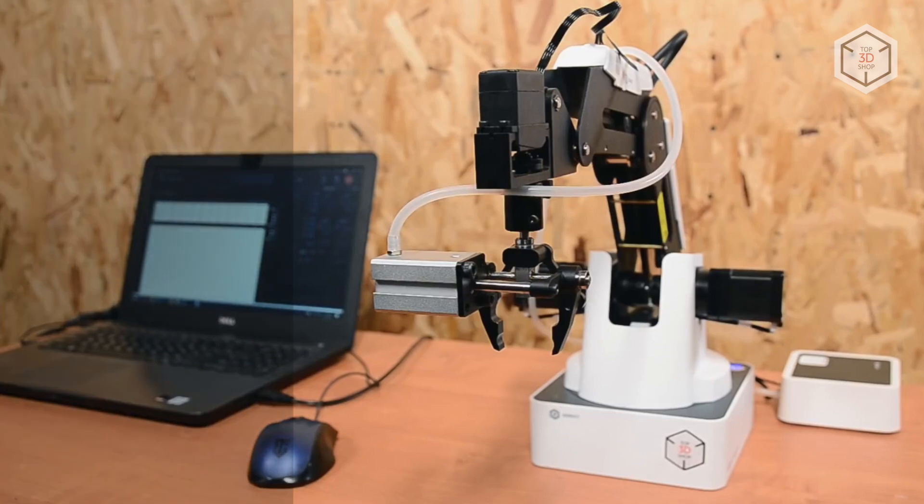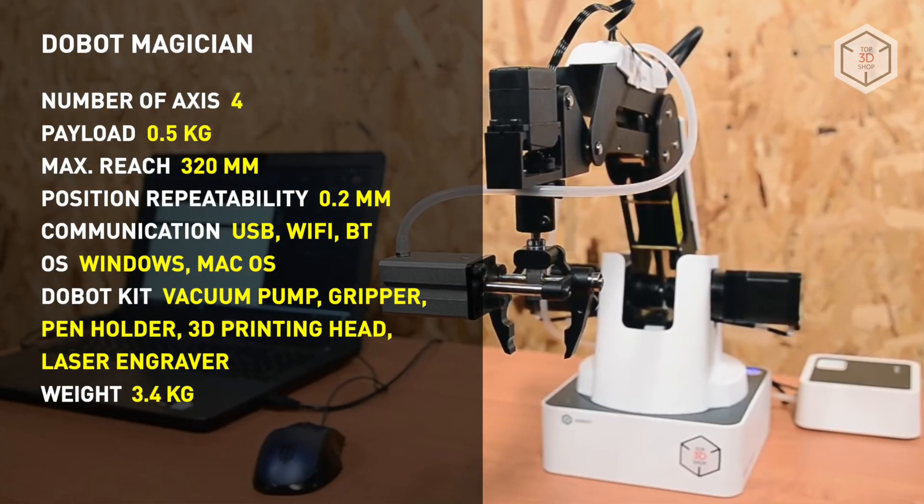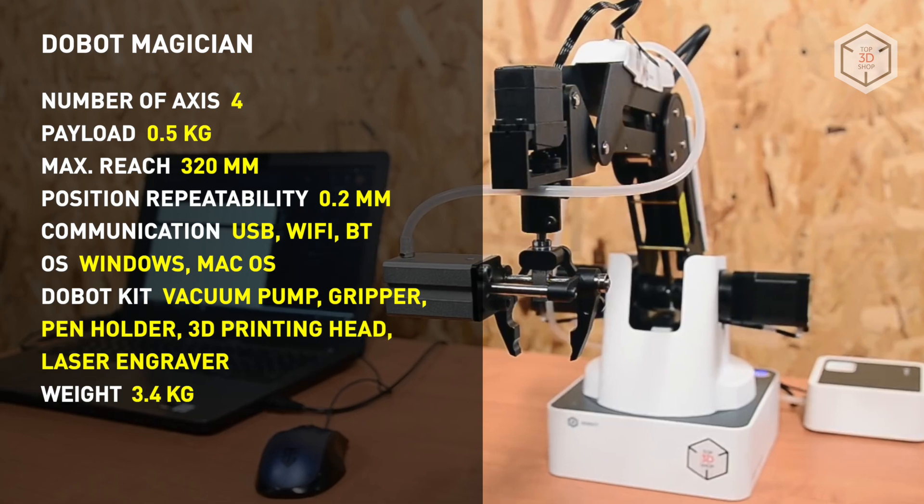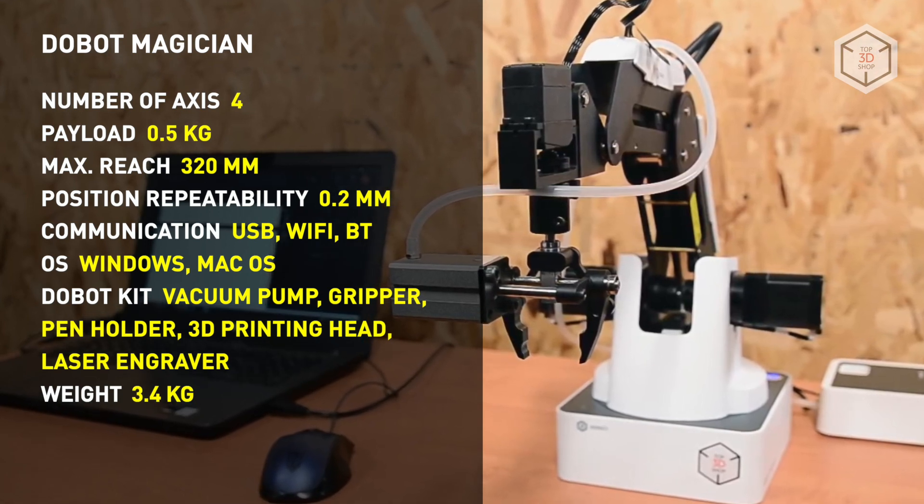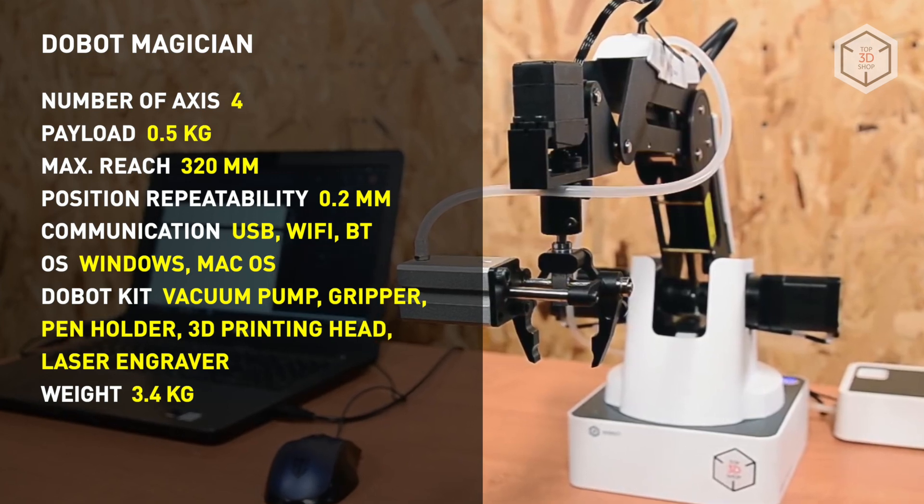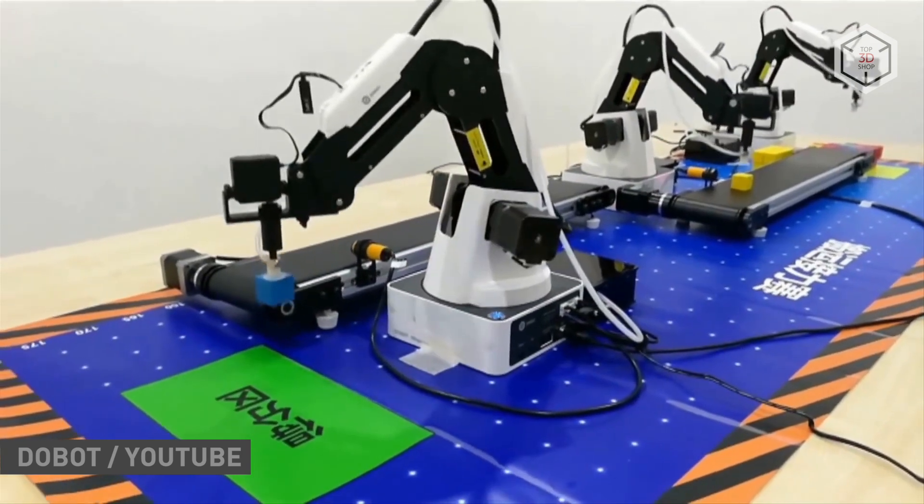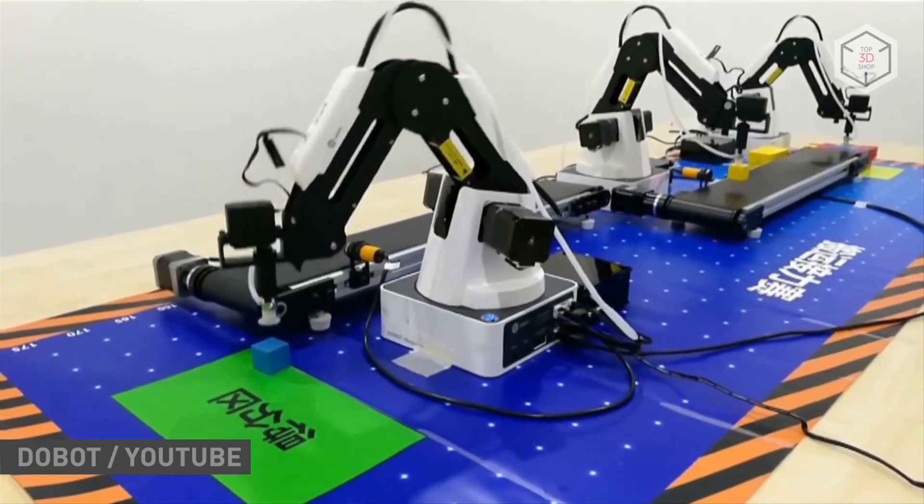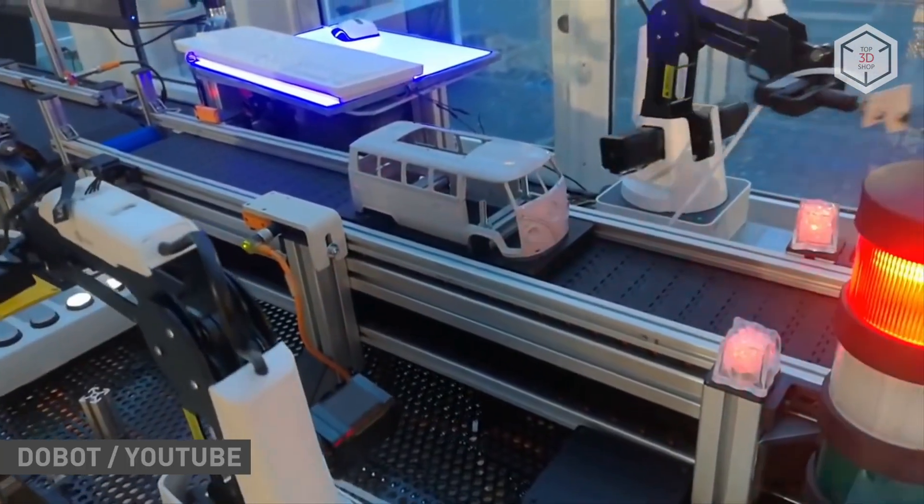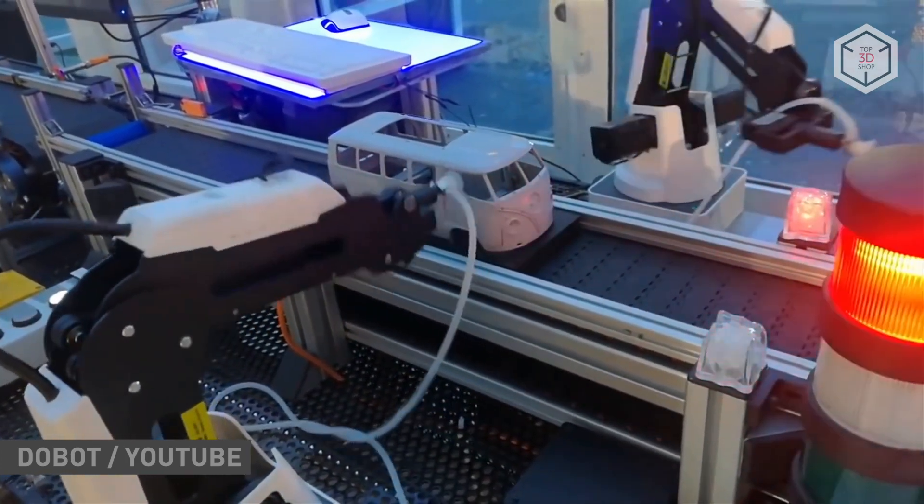The Dubot Magician is compatible with a variety of hardware and software tools, which are widely used in robotics. For example, the device supports the robot operating system software environment and Arduino microcontrollers. The Dubot Studio software allows for the simultaneous control of multiple robots, enabling you to implement an assembly line right on the table, which is also achieved thanks to the good repeatability of the device.